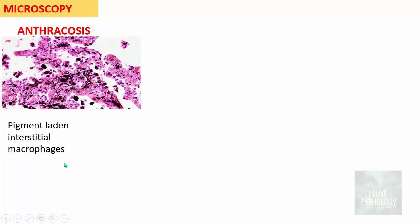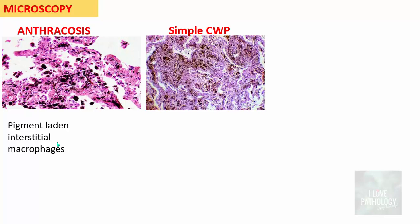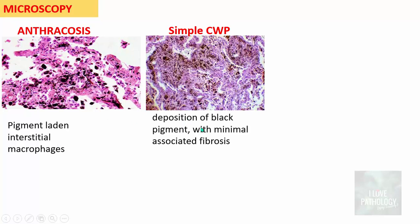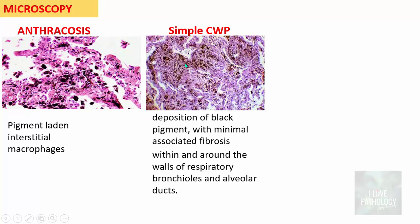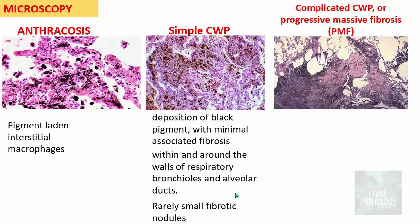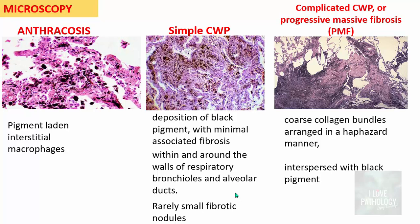Microscopically, in anthracosis you see pigment-laden macrophages in the interstitium. In simple coal workers' pneumoconiosis, you see the same black pigment deposition but with some early fibrosis within and around the walls of respiratory bronchioles and alveolar ducts. Rarely, fibrous nodules surrounded by pigment-laden macrophages may be encountered. In progressive massive fibrosis, you find larger coarse collagen bundles arranged in a haphazard manner, interspersed with black pigment.